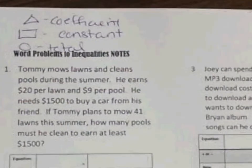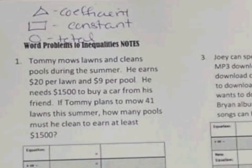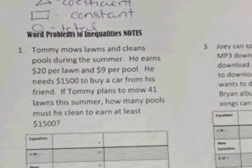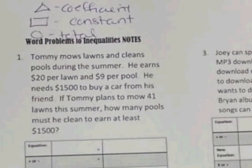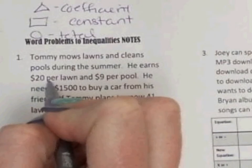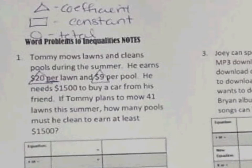Problem number one says: Tommy mows lawns and cleans pools during the summer. He earns $20 per lawn and $9 per pool. He needs $1,500 to buy a car from his friend. If Tommy plans to mow 41 lawns this summer, how many pools must he clean to earn at least $1,500? Anytime you have a 'per,' that means it is per each item, so I'm going to triangle the $20 and triangle the $9.